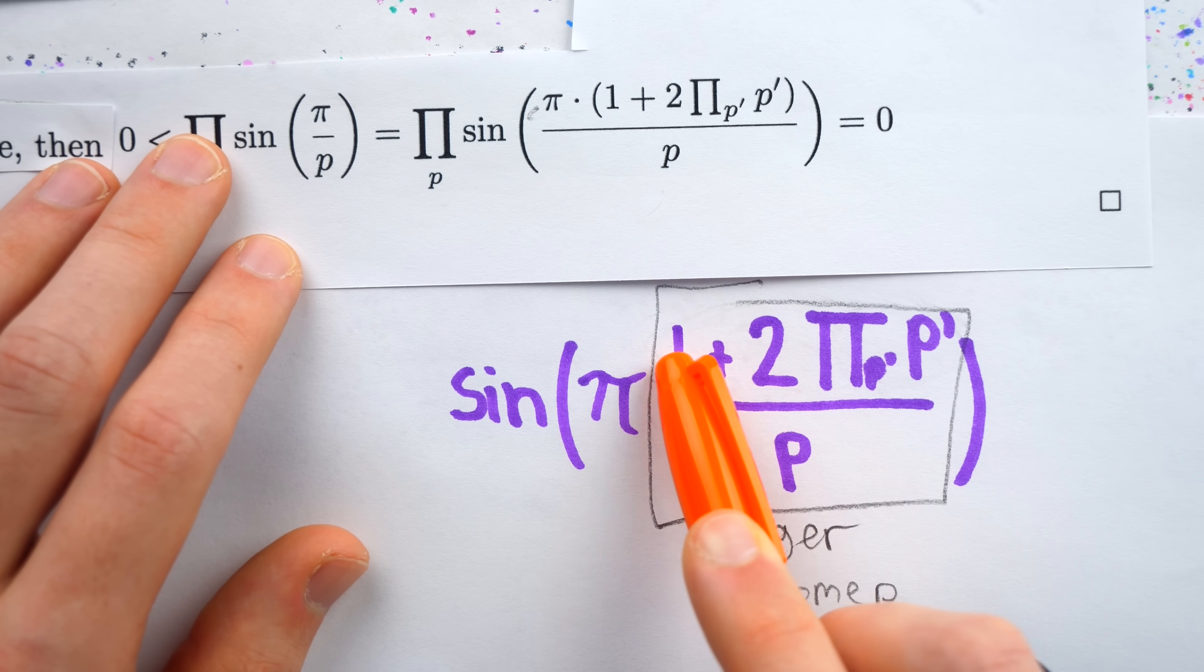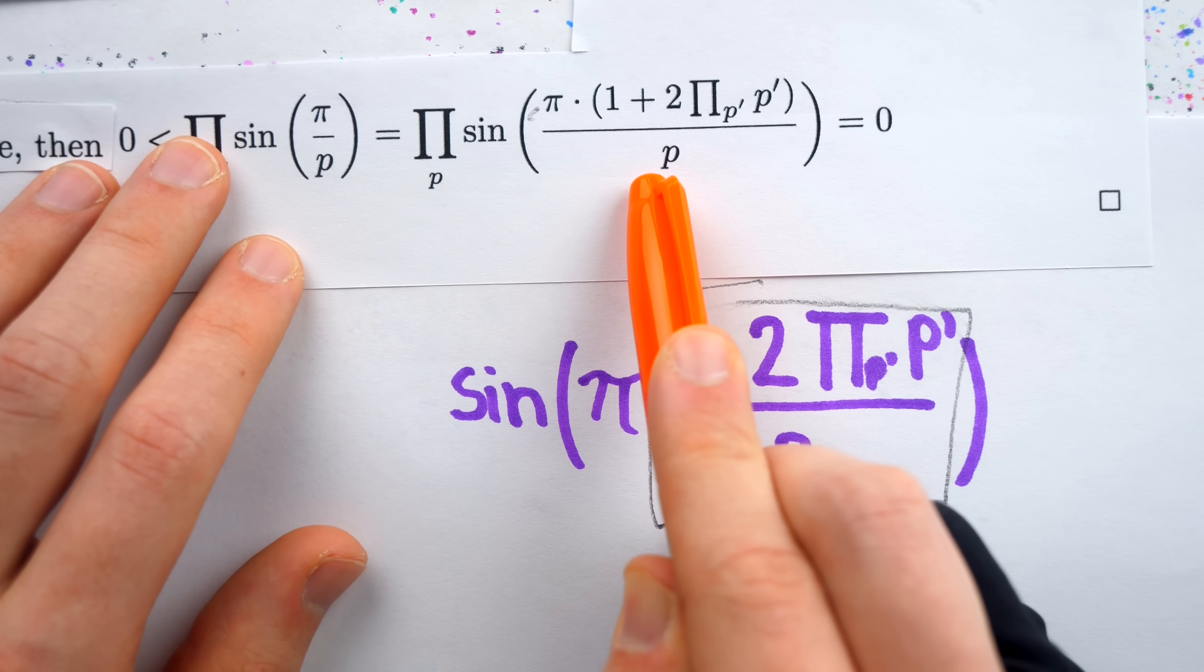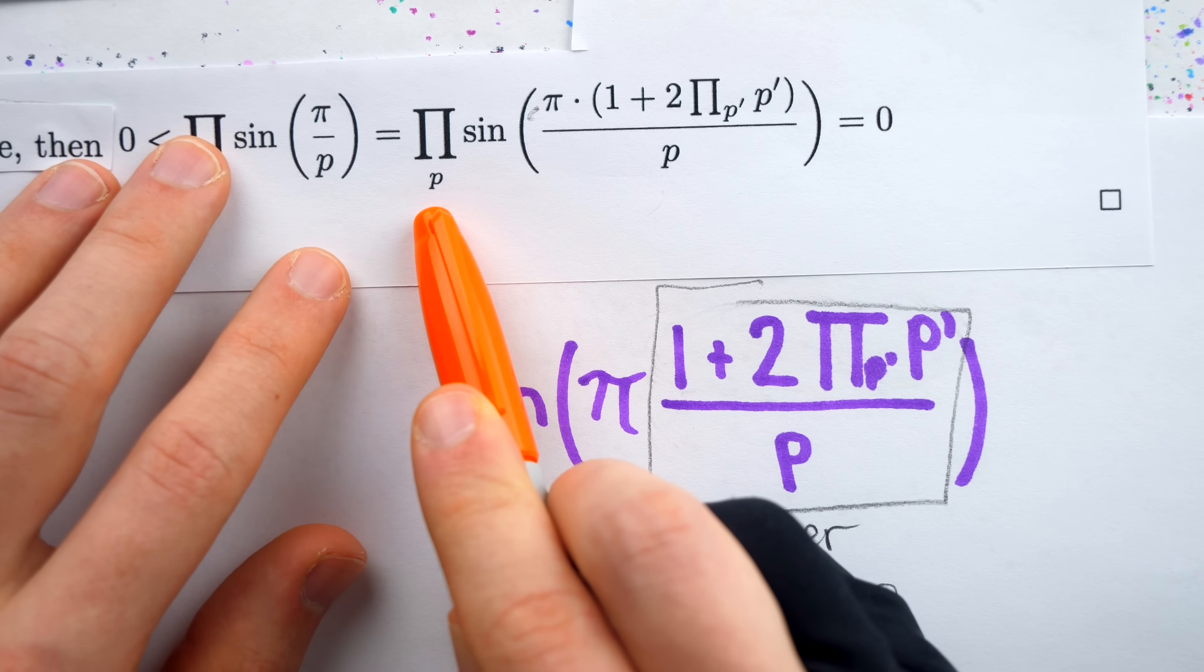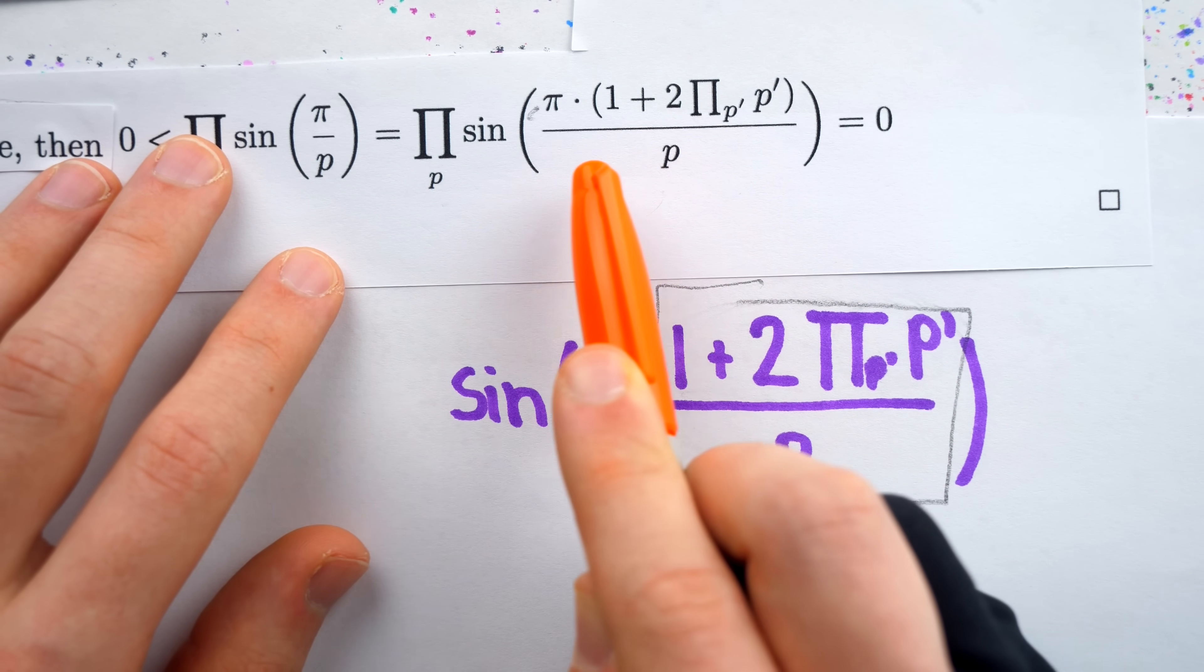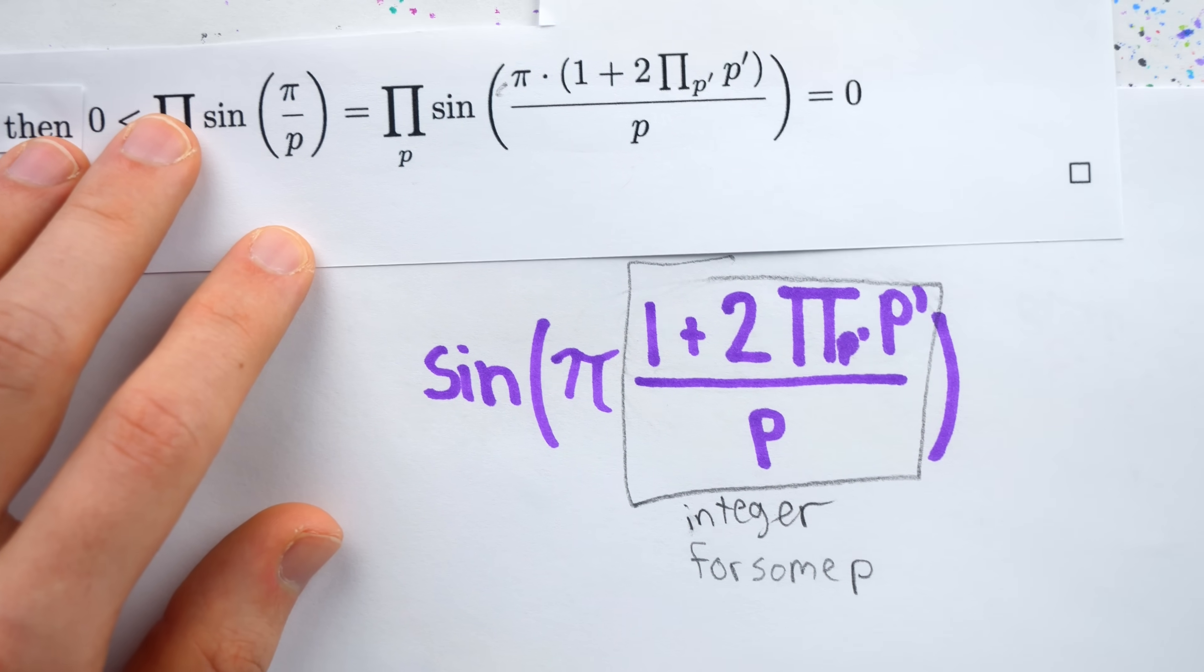So eventually, the indexing variable p is going to equal a particular prime that happens to be a factor of the numerator. And when that happens, p will cancel out with that factor in the numerator.